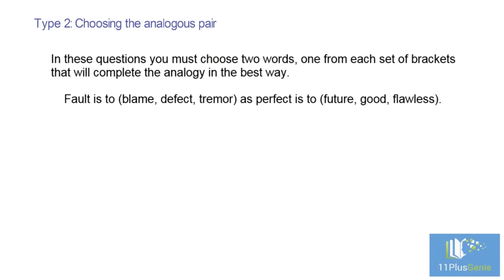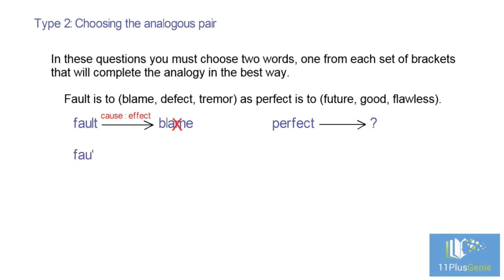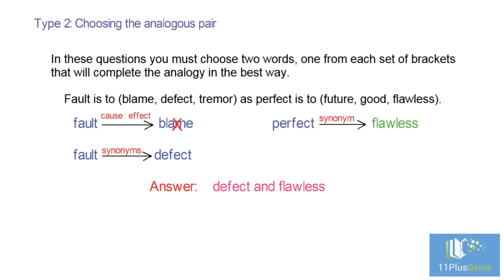Type 2: Choosing the analogous pair. In these questions, you must choose two words, one from each set of brackets, that will complete the analogy in the best way. We first need to find the relationship between fault and one of the words in the first bracket. Fault and blame: you can be blamed for the fault. Checking the second bracket — if you do a perfect job, you expect to be praised, but this is not an option. Fault and defect are synonyms. The synonym for perfect is flawless. The relationship is that the two words in each group must be synonyms of each other.